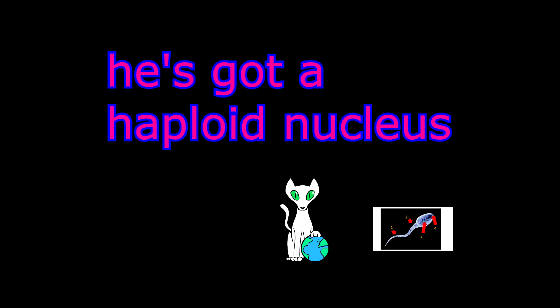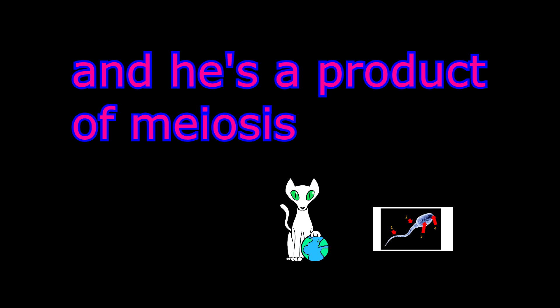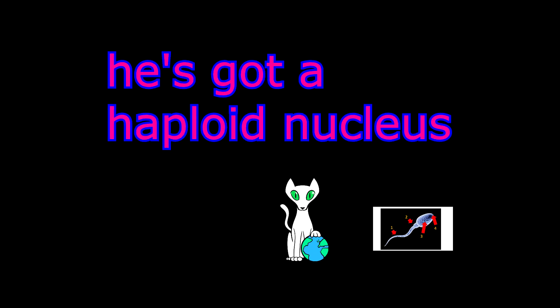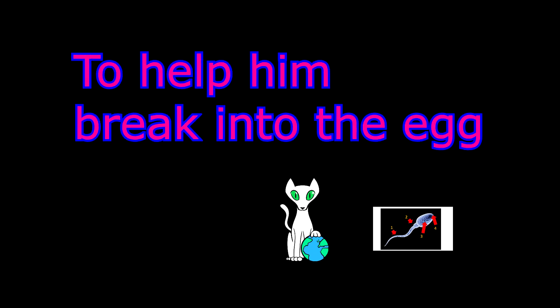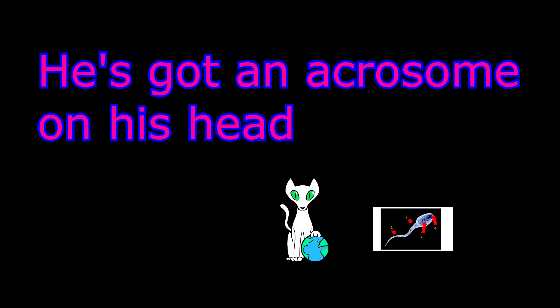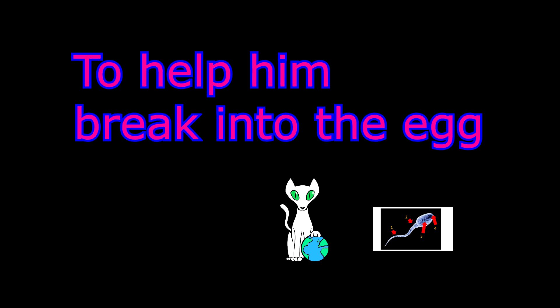He's got a haploid nucleus. He's a product of meiosis, he's got a haploid nucleus, he's got an acrosome on his head to help him break into the egg. And don't forget — he's a product of meiosis, which means he has a haploid nucleus, that's half the genetic material. Thank you.